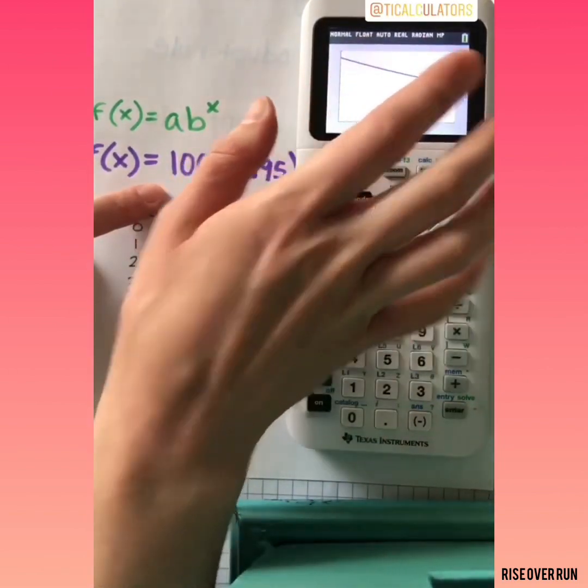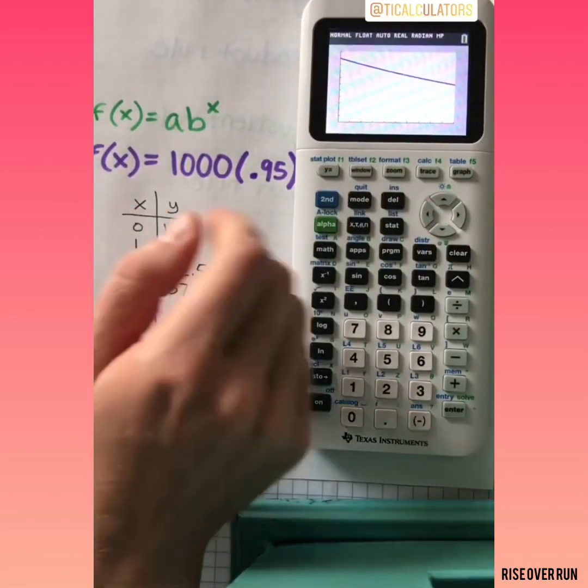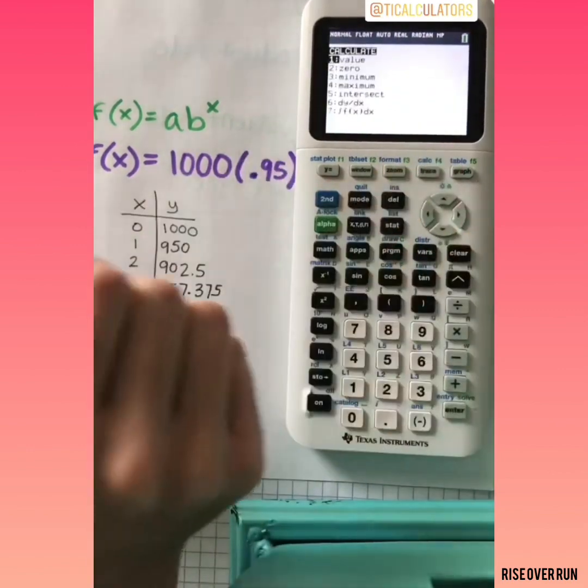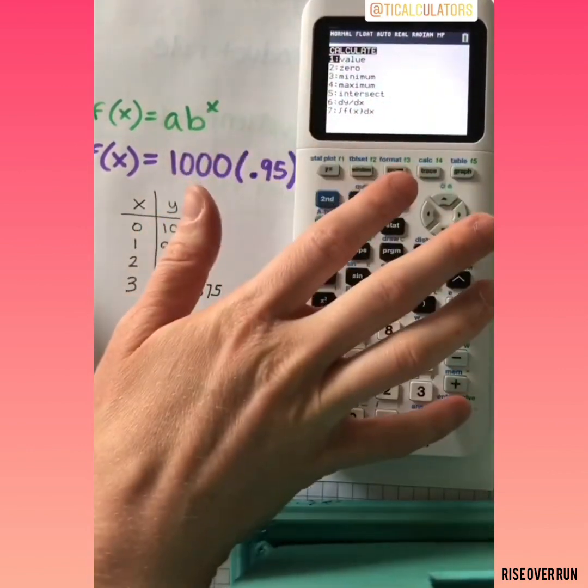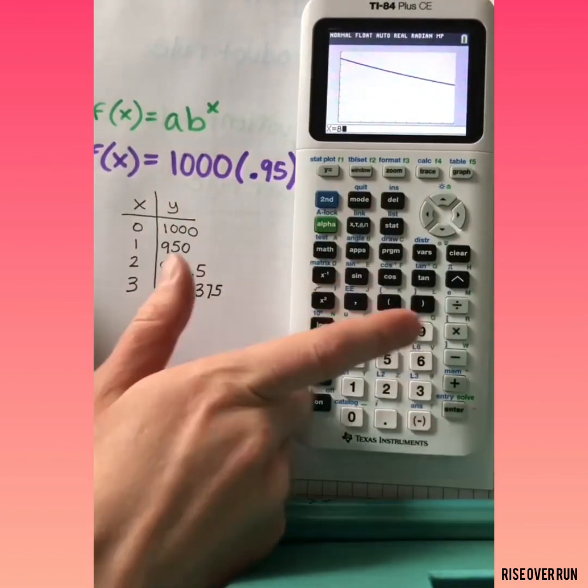And this line is slightly curving and it'll keep decreasing if I were to expand this window. If I want to find an exact value, let's say we wanted to know the deer population in 8 years, we can go to 2nd, calculate. Number 1 is value, so we hit enter. And then we can plug in x equals 8. And it'll give us the exact value of deer in 8 years.